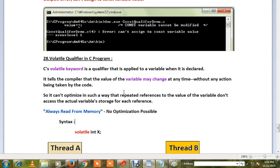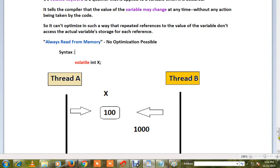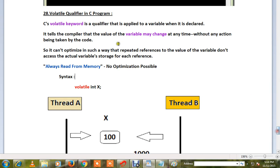Hi friends, welcome to C program tutorial. In this video, I'm going to talk about the volatile qualifier in C program. C's volatile keyword is a qualifier that is applied to a variable when it is declared. It tells the compiler that the value of the variable may change at any time without any action being taken by the code.